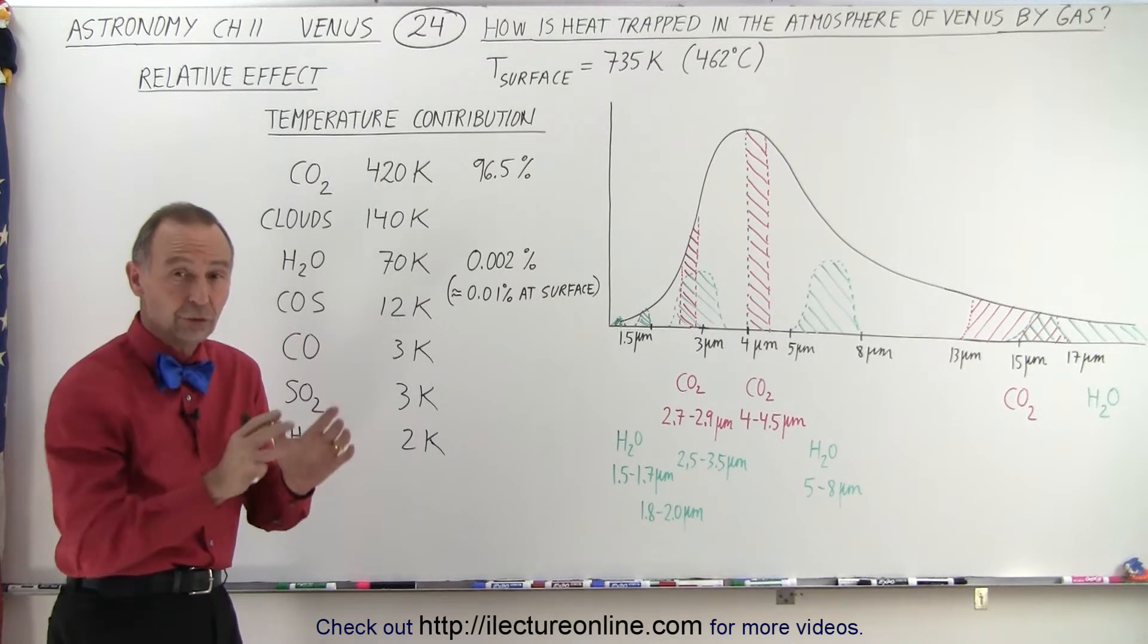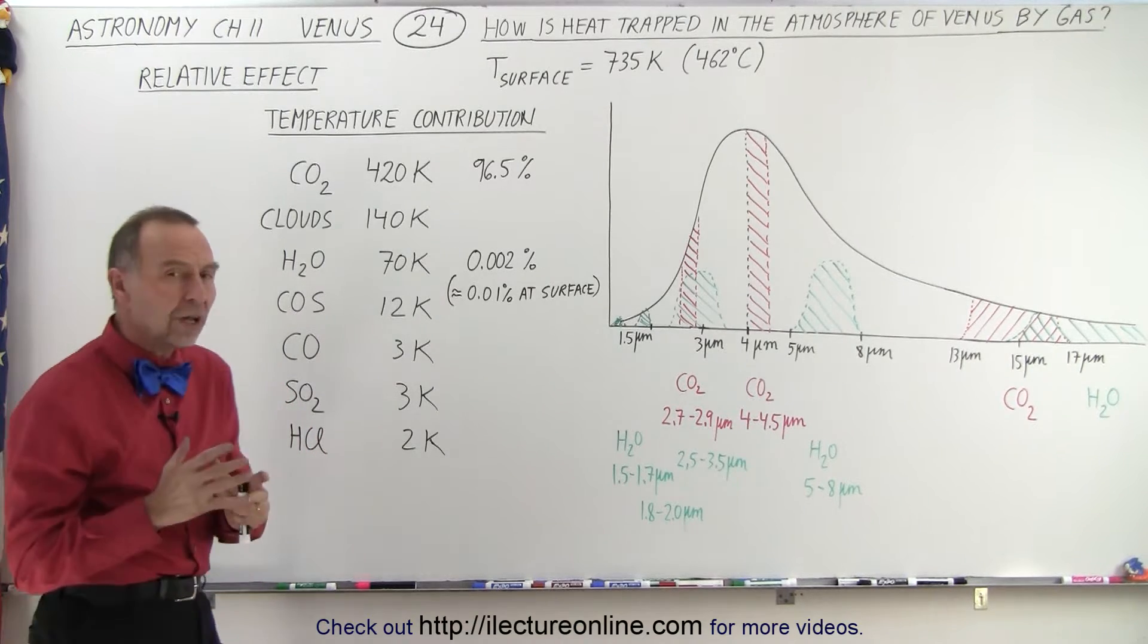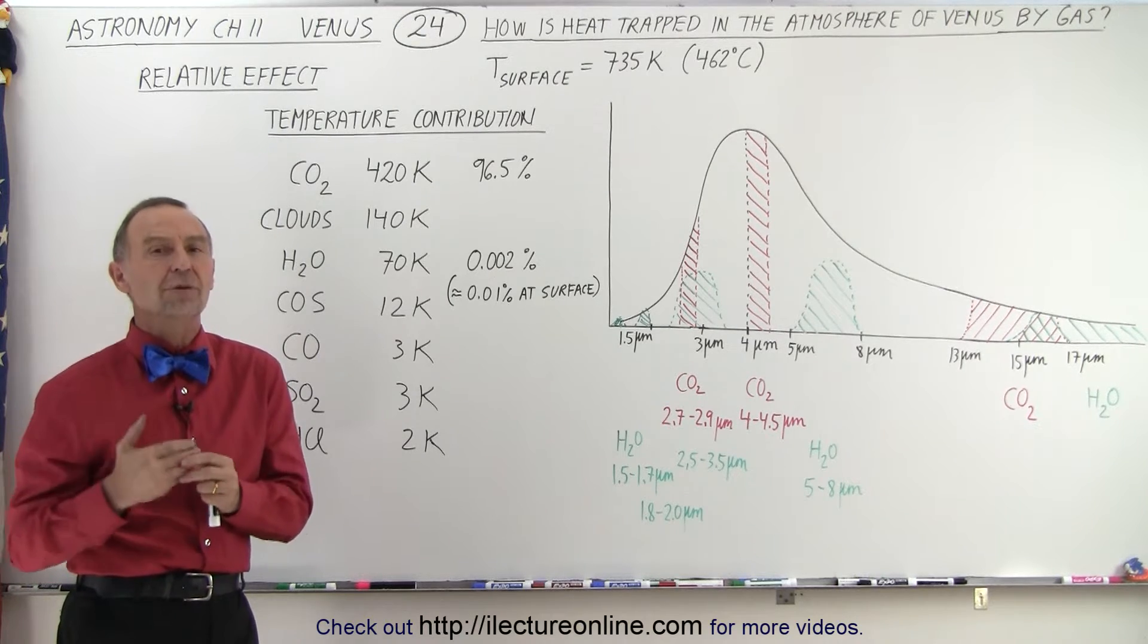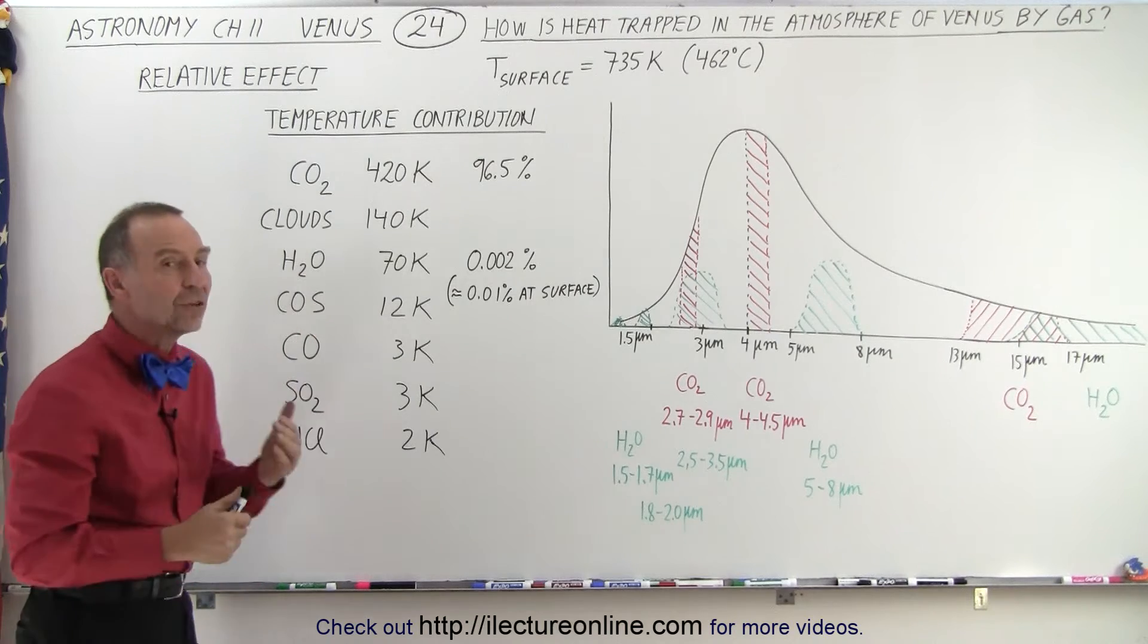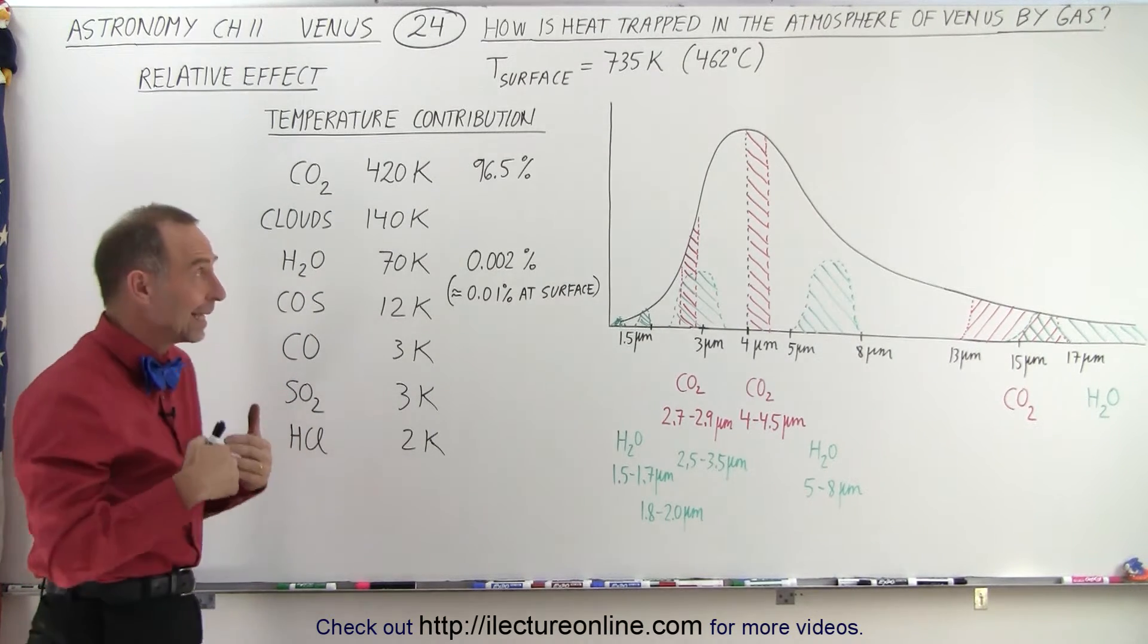It's even hotter on the surface of Venus than it is on the surface of Mercury. But what are the contributions of the gases in the atmosphere? Well, there are three main contributors to the heat retention, and so here we have the relative increase in temperature of each of the contributors in the atmosphere.